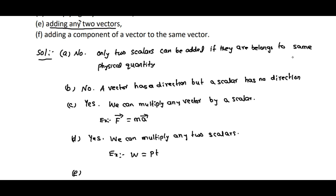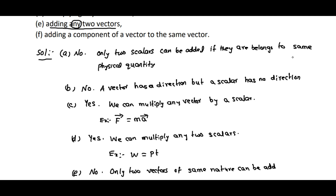Coming to E: adding any two vectors. He mentioned 'any two,' so it is not always possible. The answer is no — only two vectors of the same nature can be added, by using the law of vector addition.